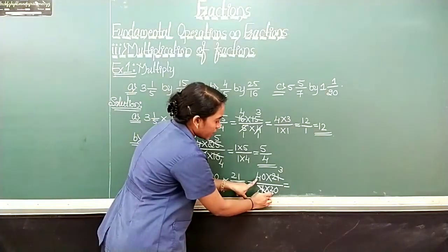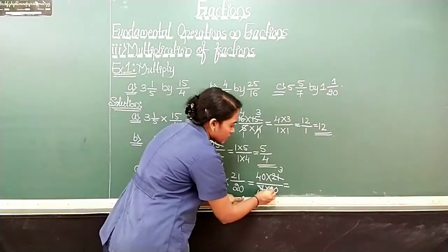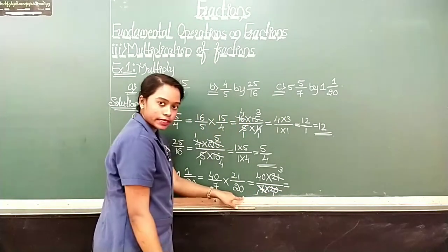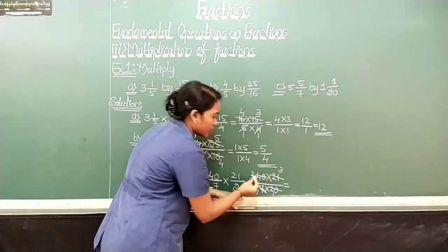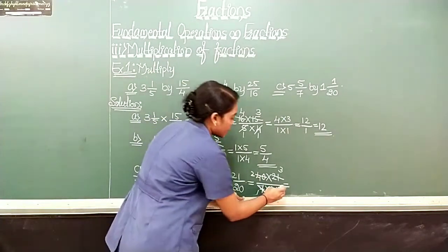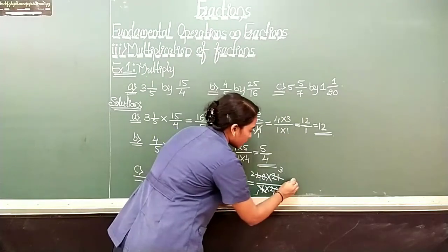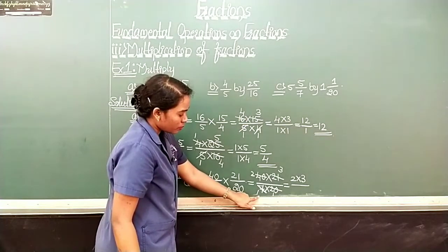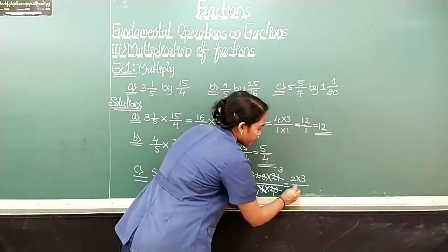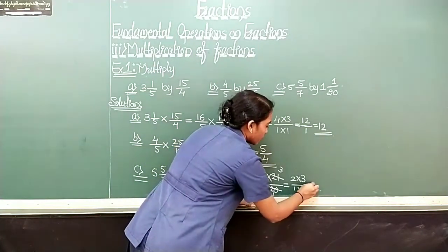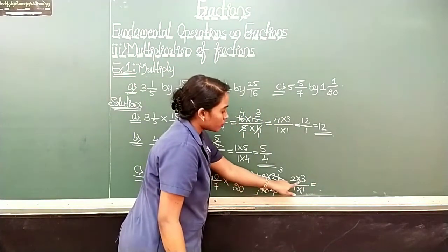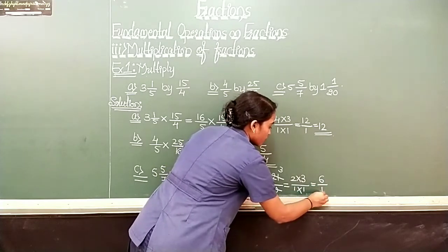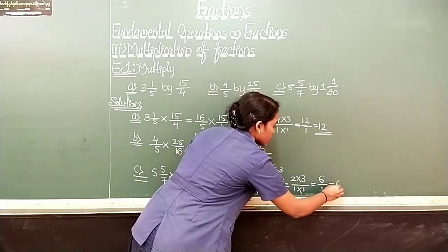Now 20 and 40 — they are divisible by 20. Divide them: 20 ones are 20, 20 twos are 40. Therefore, which is equal to: 2 into 3 in the numerator and 1 into 1 in the denominator. 2 into 3 we get 6 upon 1 into 1 is 1, which is equal to 6.